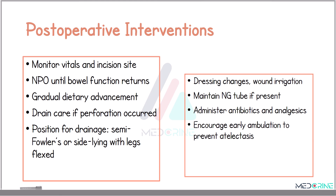Post-operatively, close monitoring of vital signs and the incision site is quite important. Maintain nil per os status until bowel function resumes, then advance the diet gradually. If a perforation occurred, monitor the drain site. Keep the patient in semi-Fowler's or side-lying position and care for the wound with dressing changes and possible irrigation. Maintain a nasogastric tube if required. Administer antibiotics and analgesia, together with early ambulation to prevent complications such as atelectasis from developing.